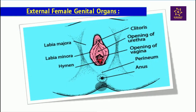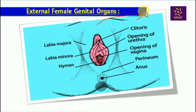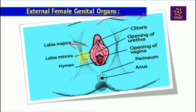Now let us discuss the female external genitalia with the help of a diagram. Here you will see a fatty skin known as mons pubis — it is a fatty skin or fatty muscles over the pubis. Then comes the labia majora, a lip-like structure covering the opening of the vagina, which is a fleshy fold. After labia majora comes the labia minora.